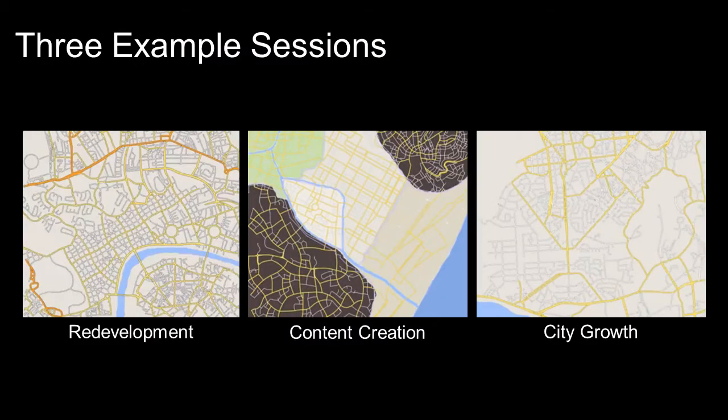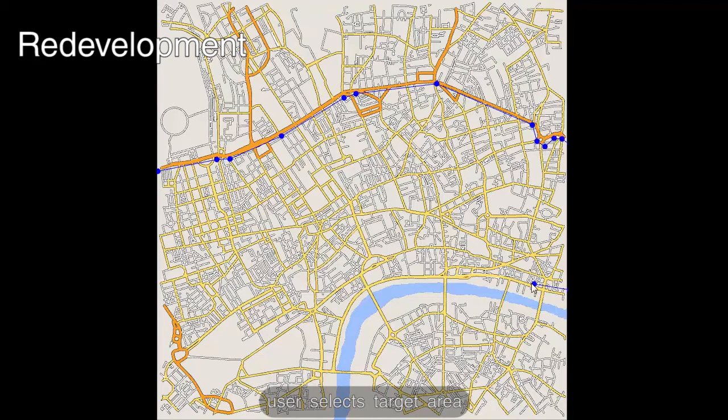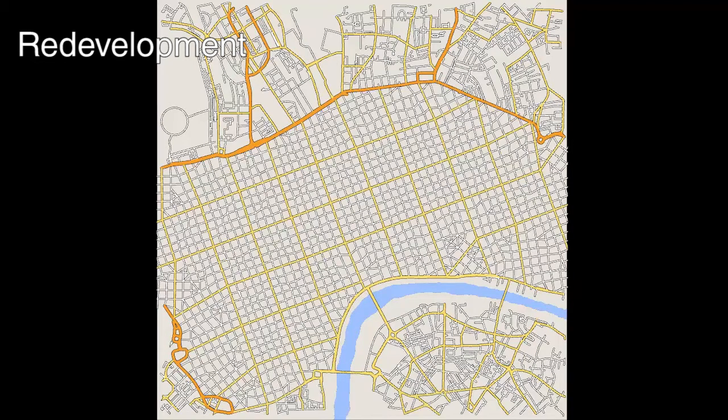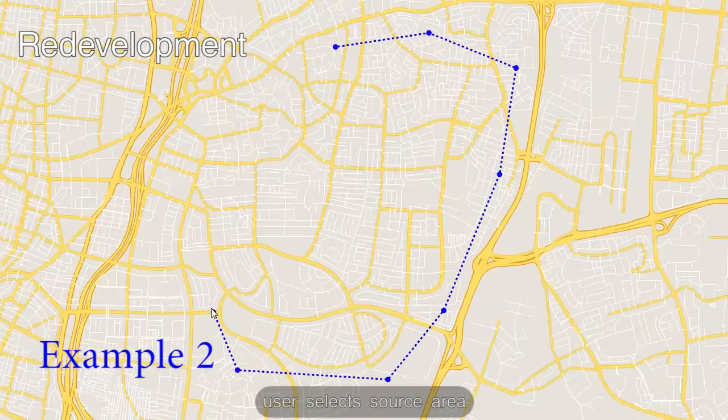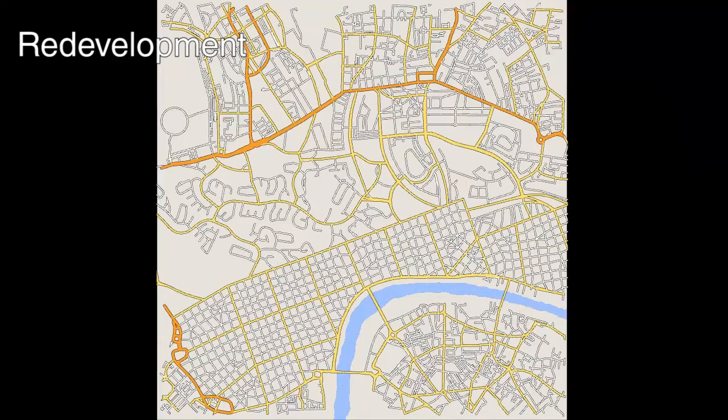We show three user-controlled urban redevelopment sessions. Initially, the road in the targeted redevelopment area is replaced by an example regular grid pattern. Next, the user selects two or more examples and blends them in the top half.